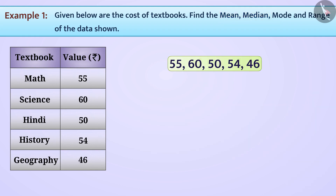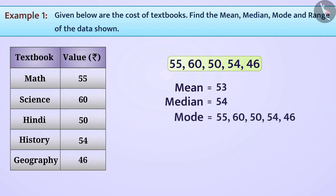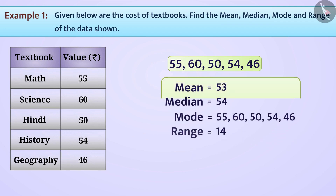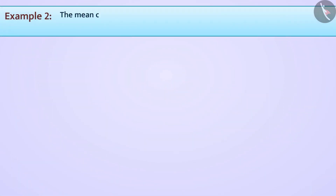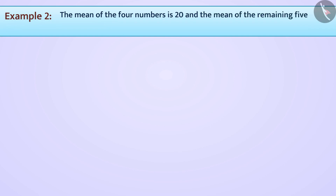In this way, we have found the mean, median, mode and range. Next example: there are 9 numbers provided. Of these 9, the mean of 4 numbers is 20 and the mean of the remaining 5 numbers is 25. Can you derive the mean of all the numbers?